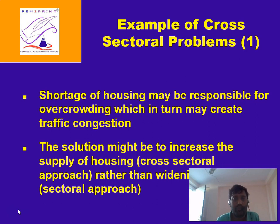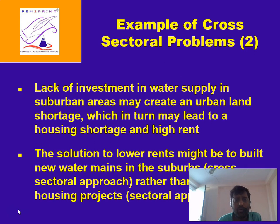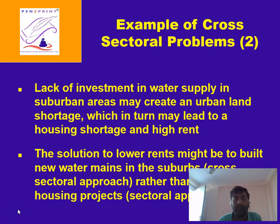We have to supply housing and improve roads, bring efficient public transport and mass rapid transit systems. Lack of investment in water supply in suburban areas may create an urban land shortage which in turn may lead to housing shortage and high rent. The solution to lower rent might be to build new water mains in suburban areas — a cross-sectoral approach — rather than simply building new housing projects, which is a sectoral approach. To solve the housing problem in suburban areas we have to provide better facilities and services so that there is an increase in the supply of better housing.